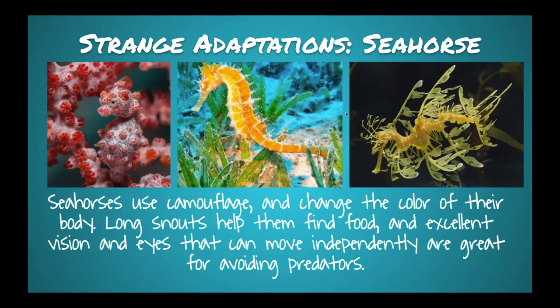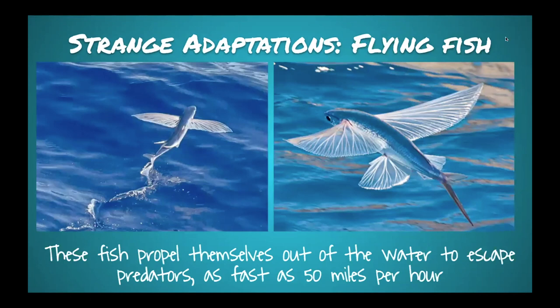The last one is the flying fish. They don't actually fly, but propel themselves out of the water and use their wing-like pectoral fins to stay above the water for a bit. They can move as fast as 50 miles per hour. They do this to escape predators — propelling themselves out to get away from larger predators underneath.